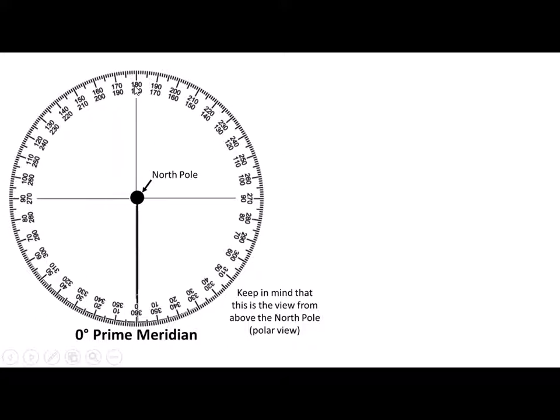So once again, we ascend from zero to 90 to 180 east over here because we're east of the prime meridian, whereas over here we go from zero to 90 up to 180 west for the western hemisphere. And when we draw these particular lines, we're going to do 86 west.